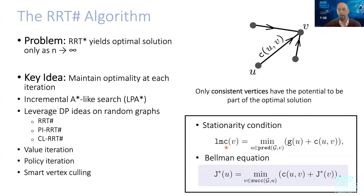Why does this work? If you look at the Bellman equation — essentially looking at the predecessors or successors of the vertex, depending on whether you run the algorithm forward or backward from the goal — it actually amounts to doing a Bellman equation. So imposing the stationarity condition means you're doing a Bellman update.